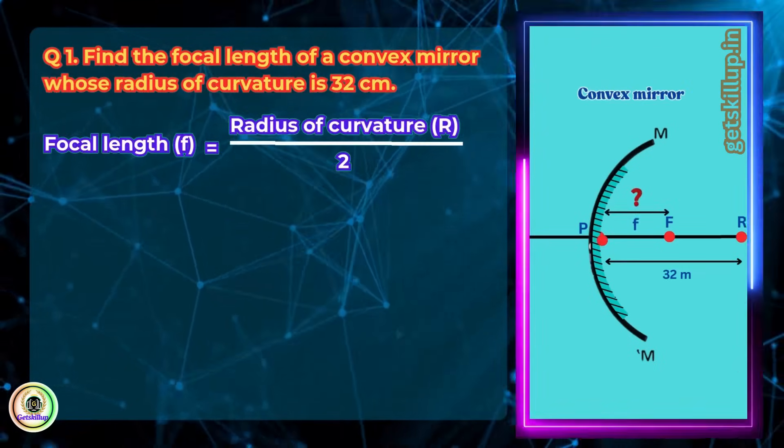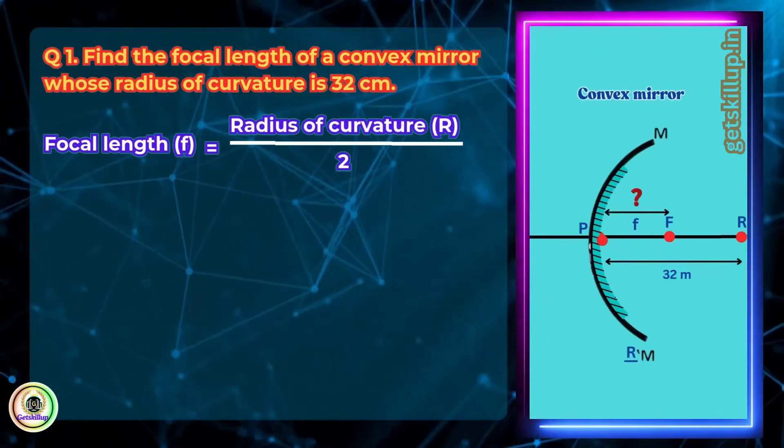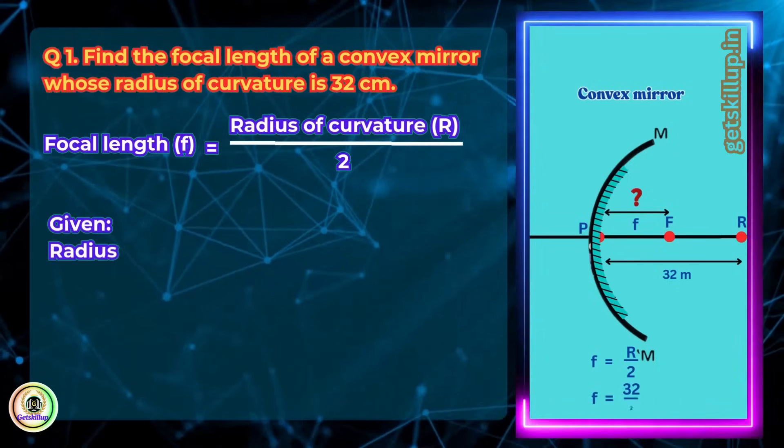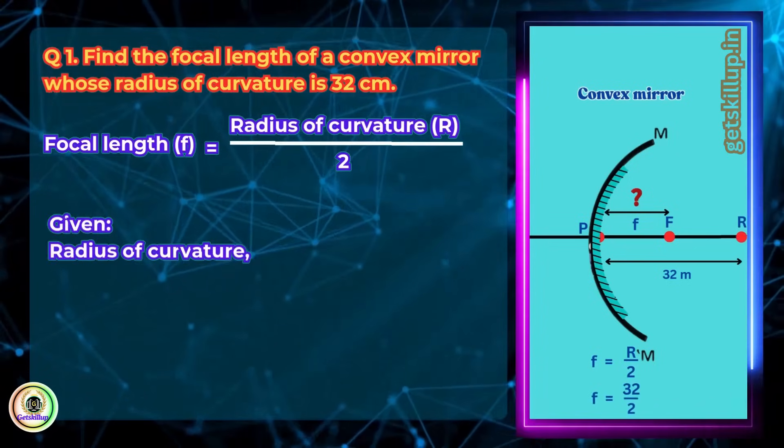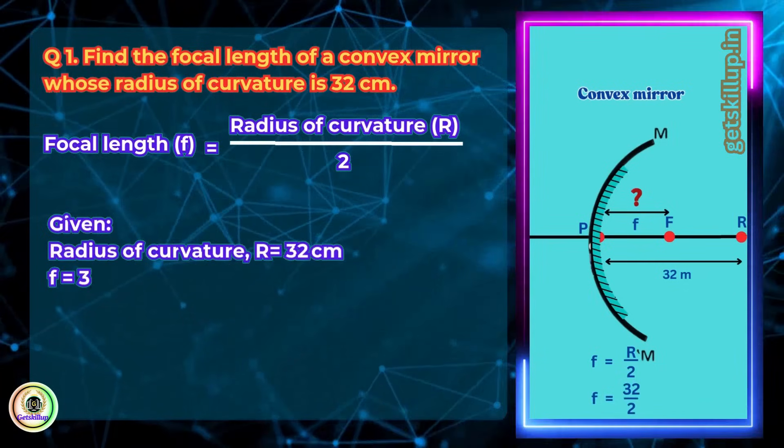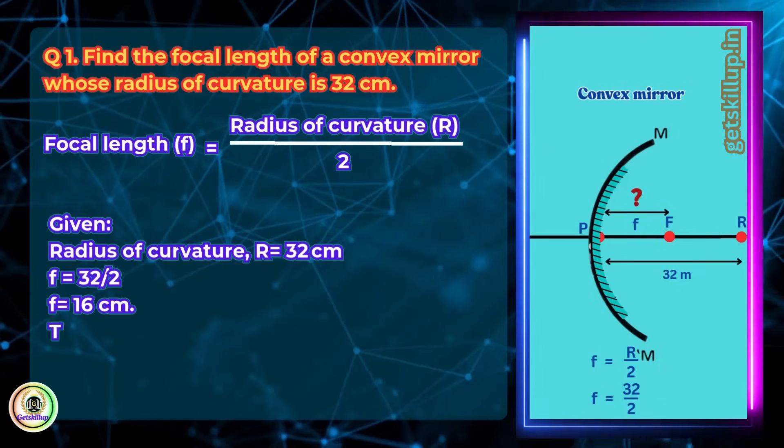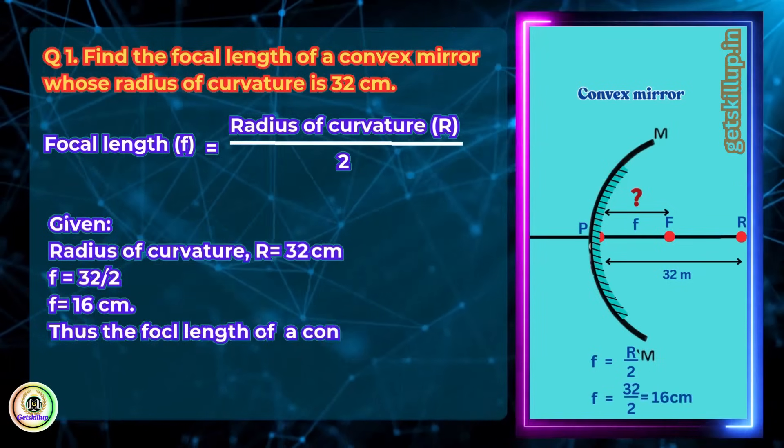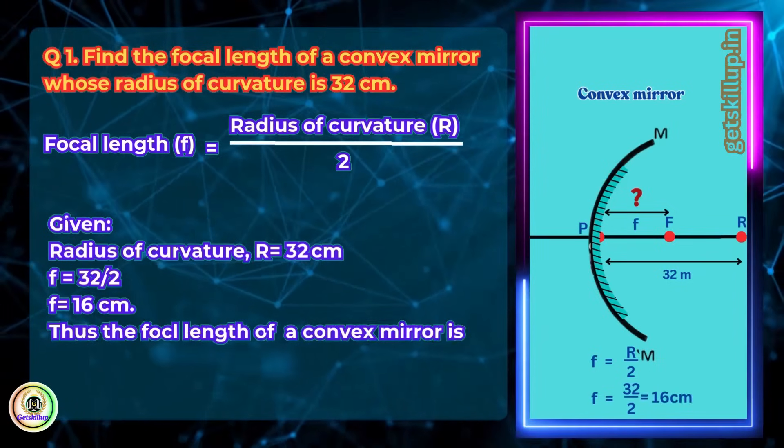Focal length f equals radius of curvature r by 2. Given, radius of curvature r equals 32 cm. Focal length f equals 32 by 2 equals 16 cm. Thus, the focal length of the convex mirror is 16 cm.